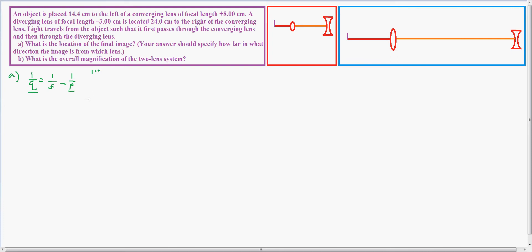I have 1 over Q equals 1 over the focal point, which is 8 centimeters for the first lens, and that is positive 8 centimeters, minus 1 over the object distance, which is 14.4 centimeters.